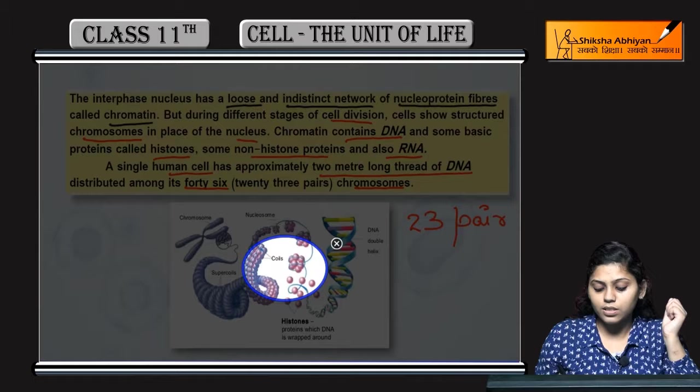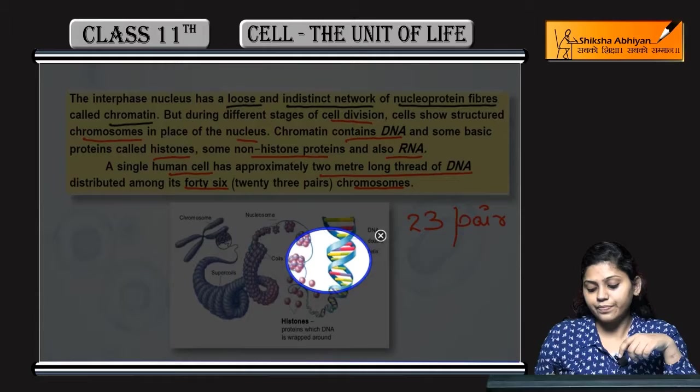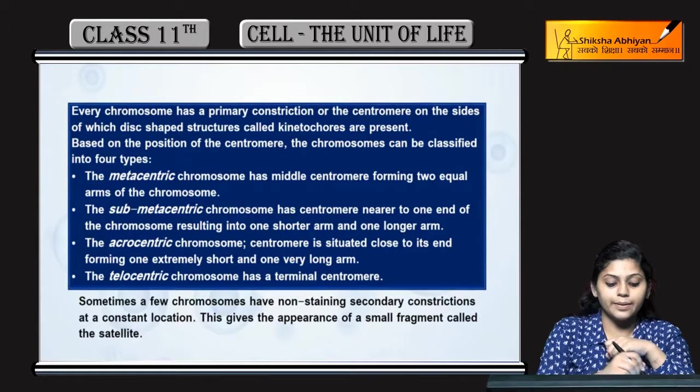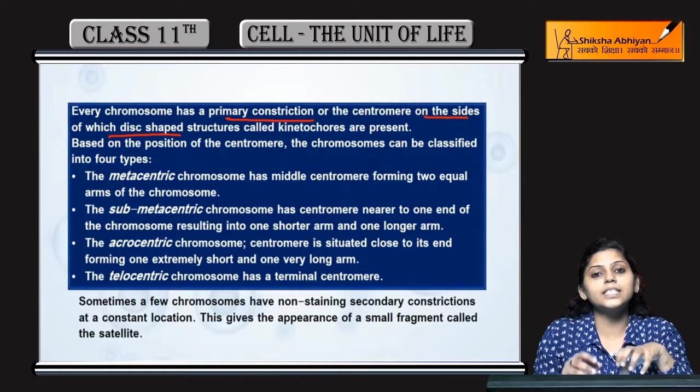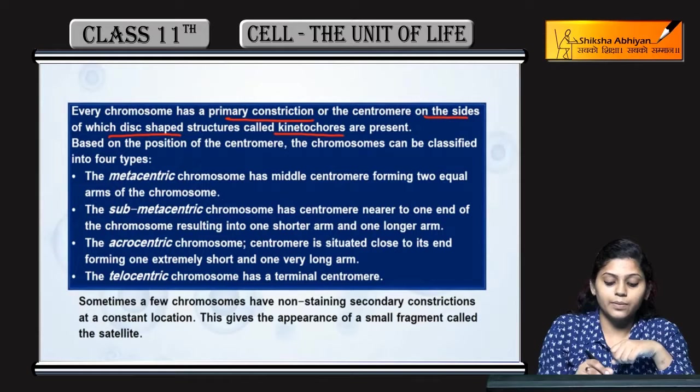Nucleosome kis ka bana hai? Histone proteins ka. Jo yeh circular structures hain — aur jo yeh thread-like structure hai, this is DNA — jo ki nuclear material hai, yeh nucleus mein present hota hai. Jo chromosomes hain, unme primary constriction hota hai on the centromere, on the sides of which disc-shaped structure hota hai jise kinetochore kehte hain.